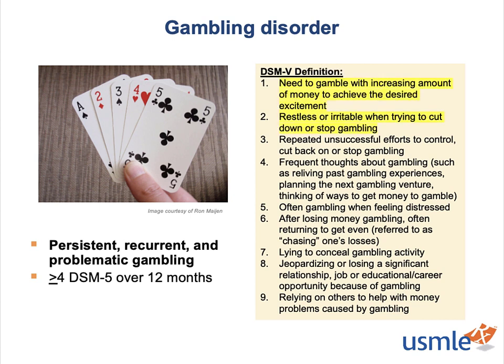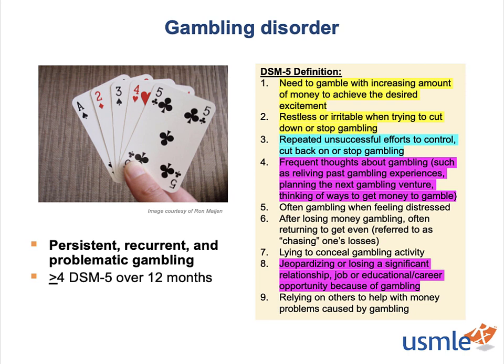The overlapping criteria include tolerance and withdrawal, a lack of psychological control over the gambling, and criteria involving persistent use despite social or situational consequences.